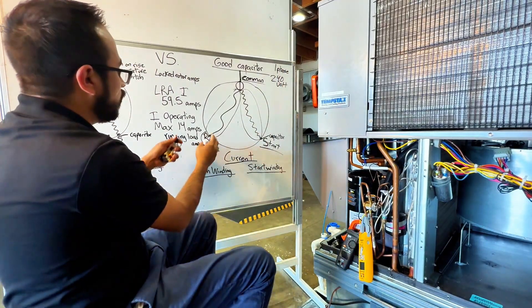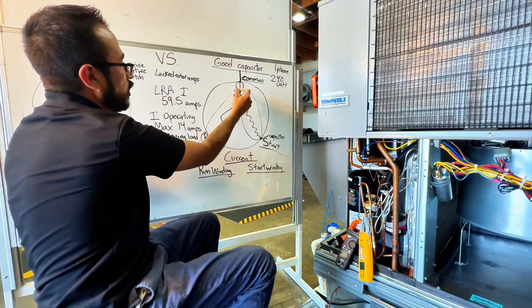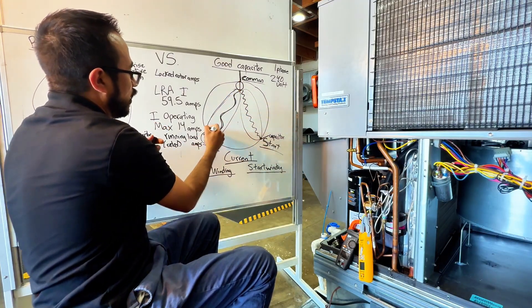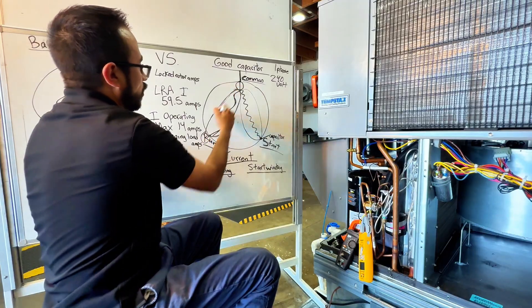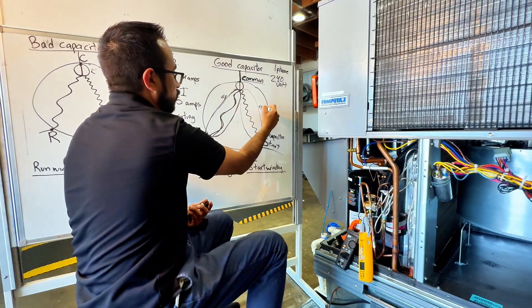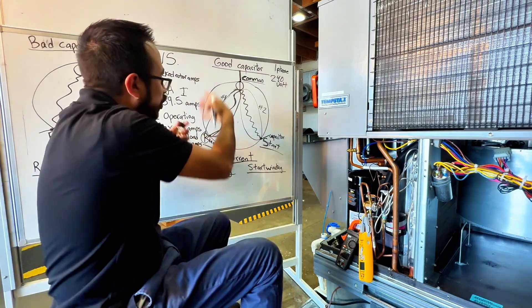So, this one here is your run winding, as you can see. Run winding. It has less of a resistance, but that's one winding there. And the start winding has more resistance. But as you can see, it has two windings.